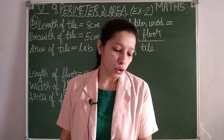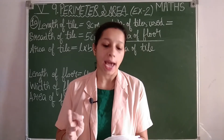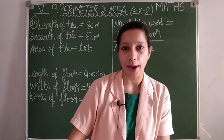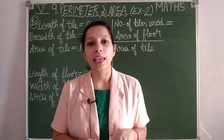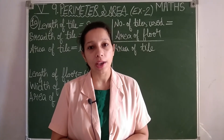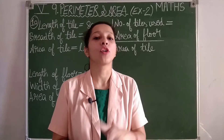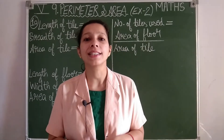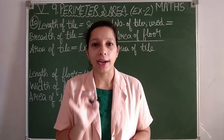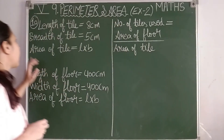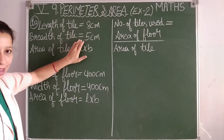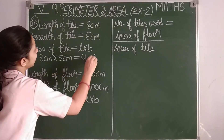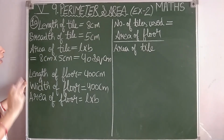Question number ten: how many tiles of length 8 centimeters and breadth 5 centimeters are needed to tile the floor of a dining space 400 centimeters long and 400 centimeters wide? This is the same pattern as question eight. Number of tiles equals total area of floor divided by area of one tile. Area of one tile equals 8 centimeters into 5 centimeters equals 40 square centimeters.